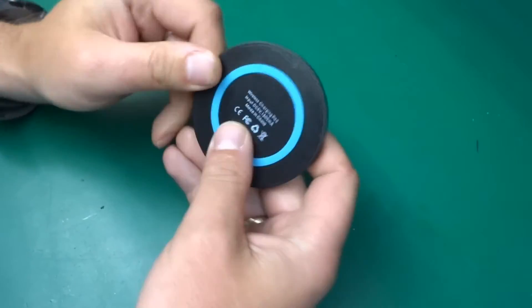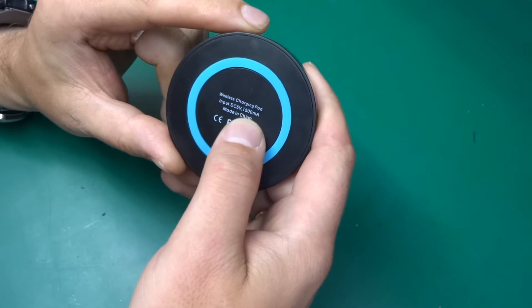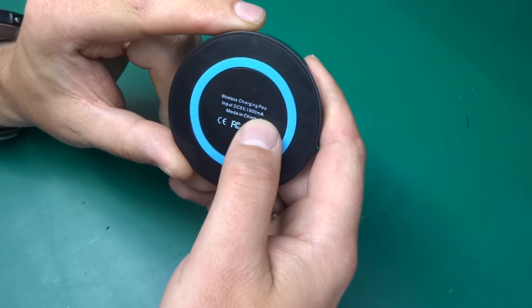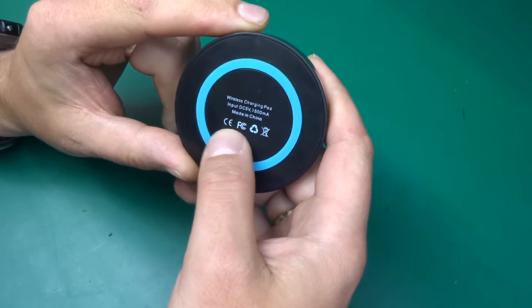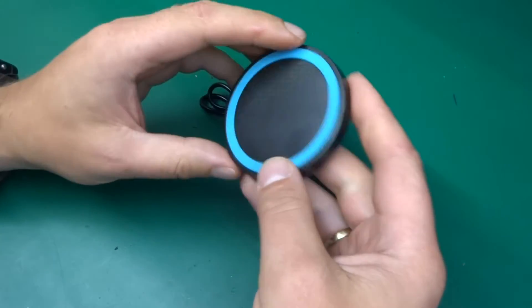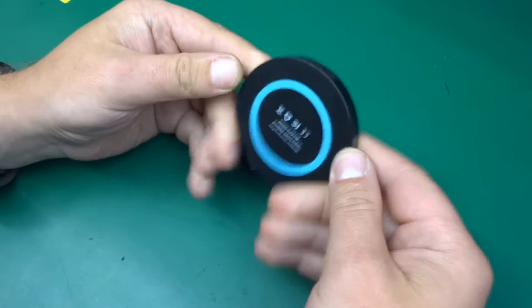So let's have a look. All it says on the back, it's a wireless charging pad. Input DC 5V 1500mA, made in China, and again China export, FCC recycle, and don't throw it away.